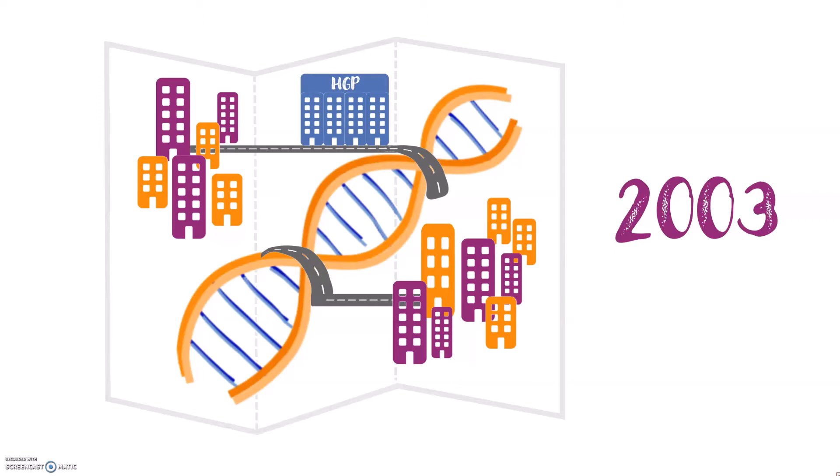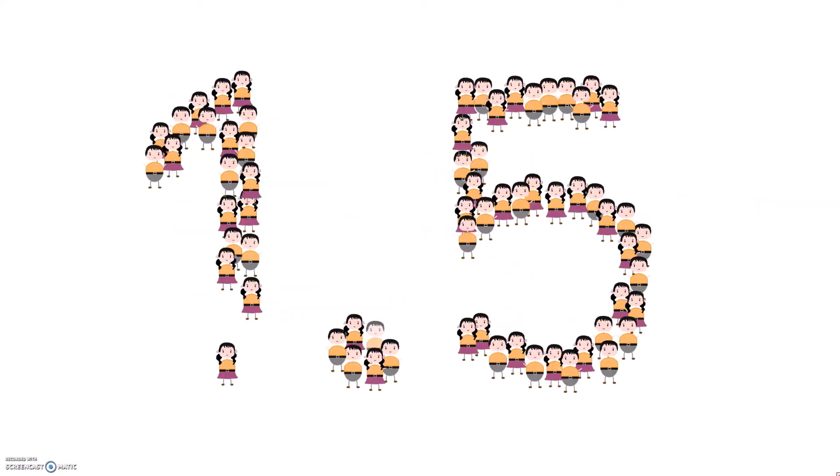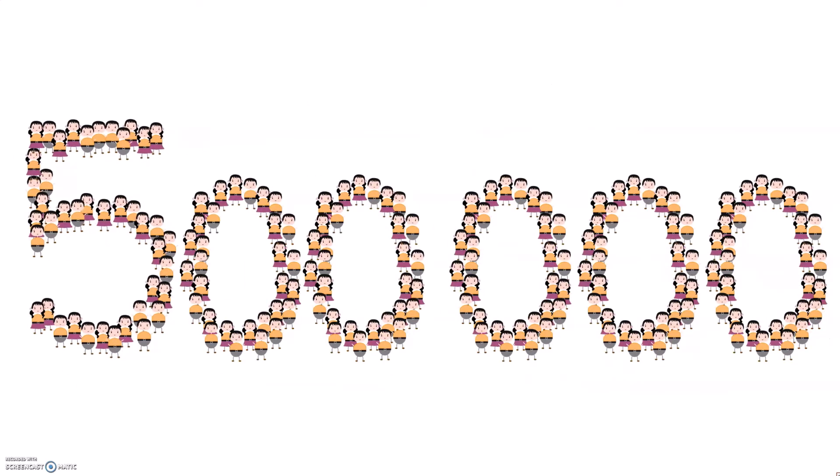Since then, advancements in high-throughput sequencing methods have enabled over 1.5 million human sequences to be completed and stored for use and research, of which the UK Biobank contributes close to 500,000.